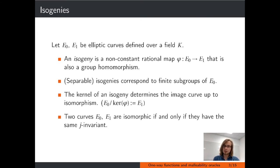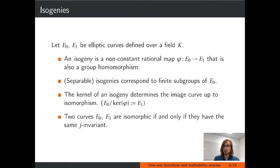The other direction is also true: every finite subgroup of E0 defines an isogeny. Indeed, we have a one-to-one correspondence between finite subgroups of E0 and separable isogenies. For these isogenies, the degree of the isogeny — the degree of the map when written as a rational map — equals the cardinality of the kernel. This kernel determines the image curve up to isomorphism, which is why it makes sense to write the image curve as the quotient of the starting curve and the kernel. Elliptic curves that are isomorphic share the same J-invariant, which can be efficiently computed.